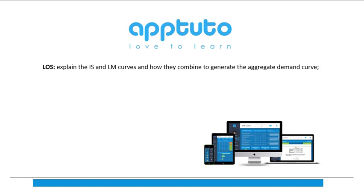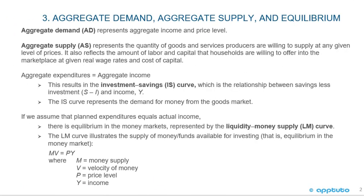This LOS has explained the IS and LM curves and how they combine to generate the aggregate demand curve. Aggregate demand represents aggregate income and price level. Aggregate supply represents the quantity of goods and services producers are willing to supply at any given level of prices. It also reflects the amount of labor and capital that households are willing to offer into the marketplace at given real wage rates and cost of capital.